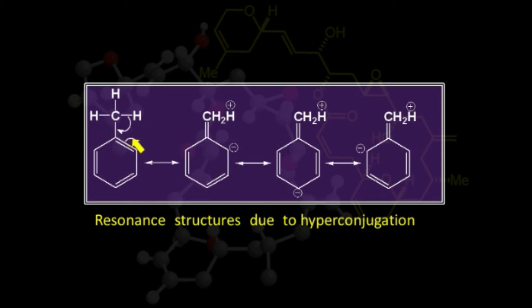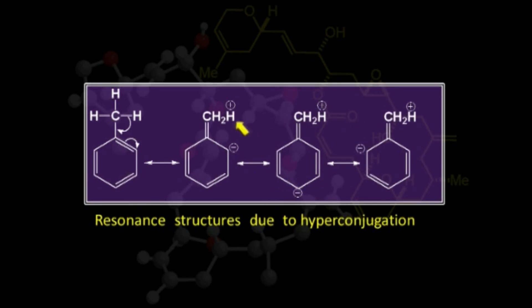Electrons are released towards the benzene ring, so the benzene ring acquires a slight negative charge. This negative charge is delocalized throughout the benzene ring. Any electrophile having a positive charge can then attack at the ortho or para positions with respect to the original methyl group. Hence, the methyl group shows an ortho-para-directing effect.